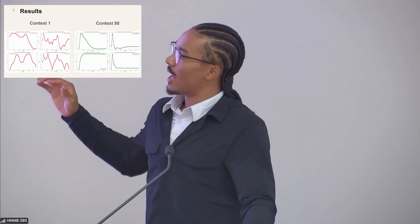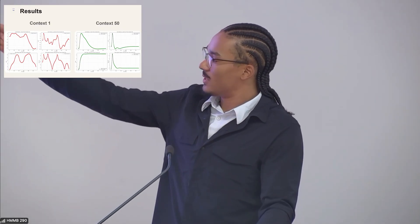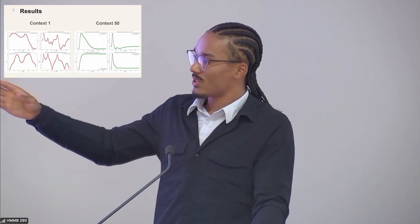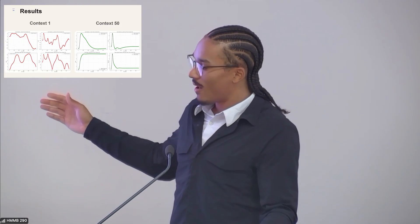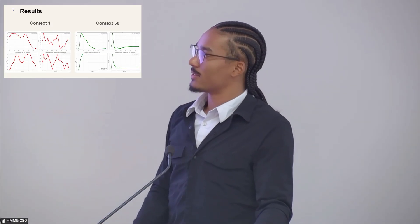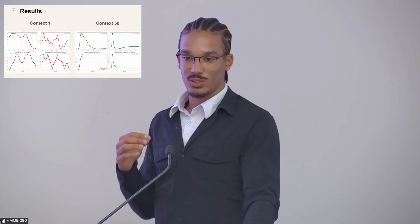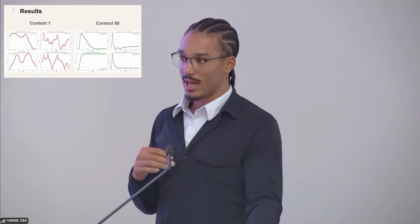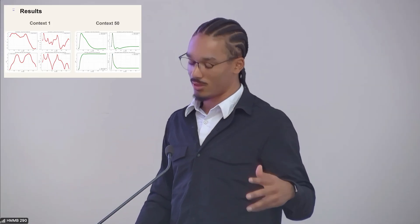And then here are the state plots. So this is the velocity, the position, the theta, and the theta dot over time. And as you can see, context 1 just stumbles around. It doesn't look very good. But then context 50 has these very smooth plots. So that just proves that through in-context learning, we're able to learn new system dynamics, and something pretty complex that a controller would have a very difficult time learning on the fly.